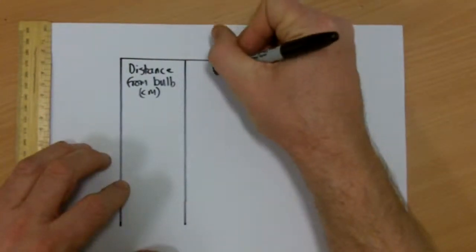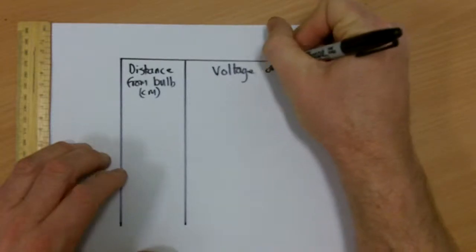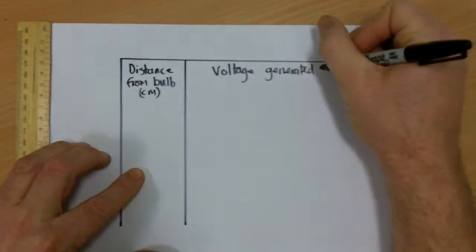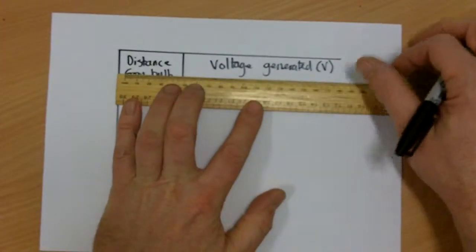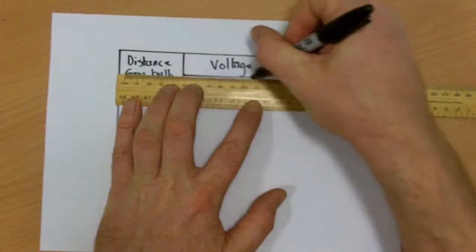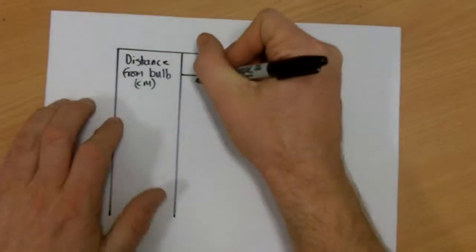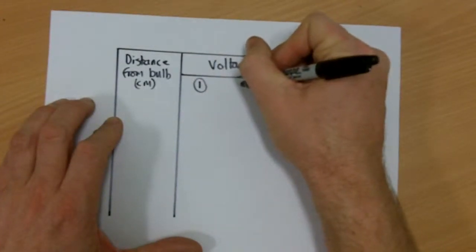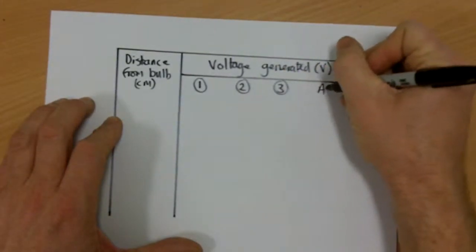And then I'm going to read the voltage generated from the solar panel. And that's going to be in volts. Now, if you're doing repeats and an average, it's often best to format your work as I'm doing. So this is reading number one. This is reading number two. Reading number three. And then space for an average.